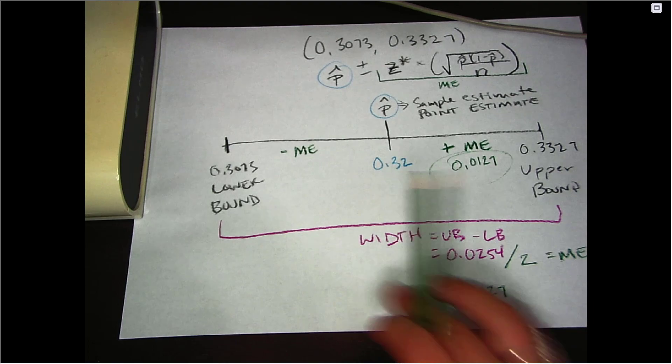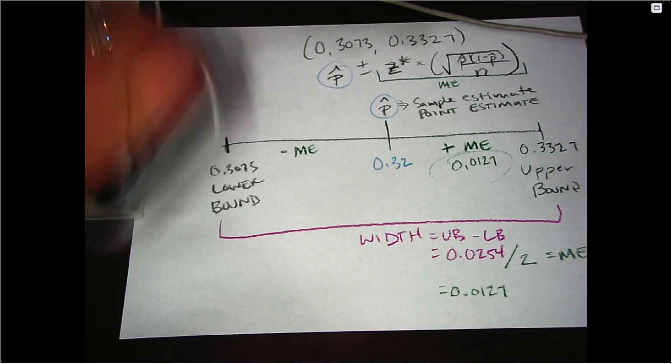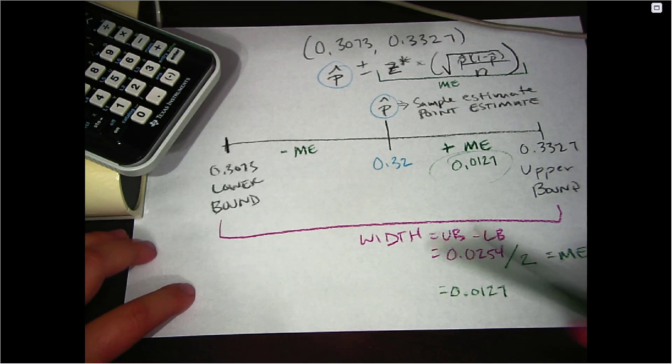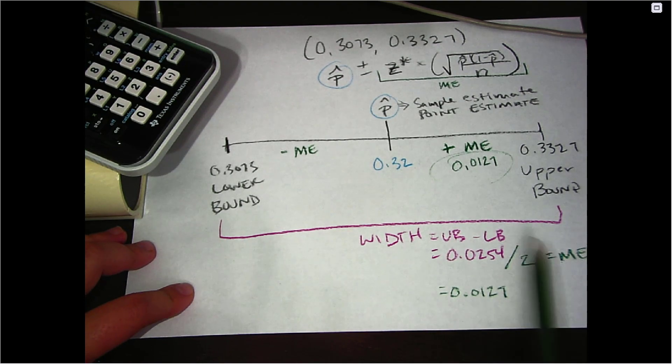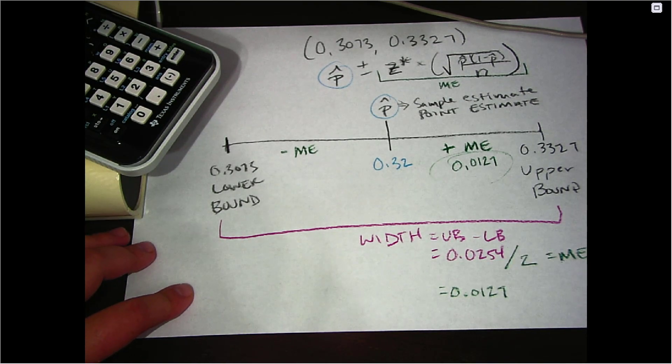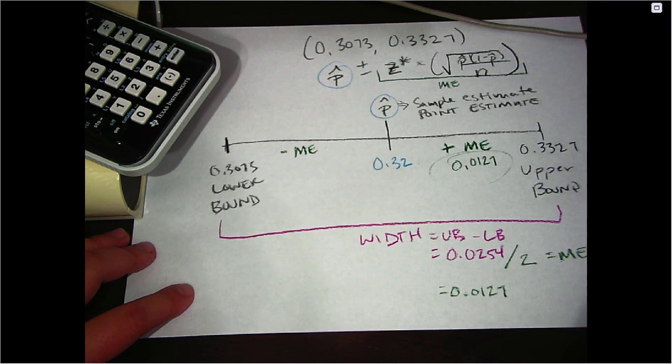So there are opportunities for you to be able to work backwards, or if you were just given a confidence interval, you'd be able to figure out yourself what the point estimate was, what the margin of error is, what the width is. And you could do a lot with that.